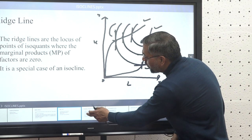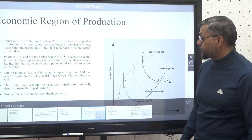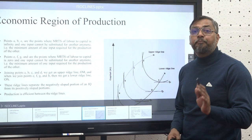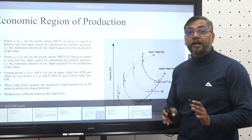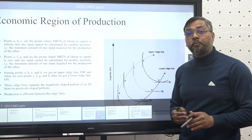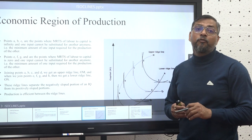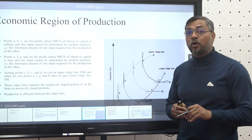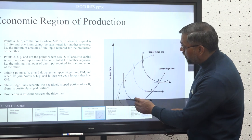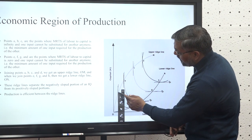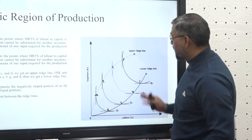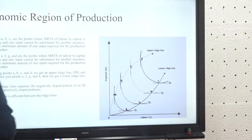An economic region of production is a region where a producer is willing to produce and production takes place in an economic manner. Beyond the economic region of production it is not feasible for a producer to gain benefits or to make production in an economic manner. If you look at points A, B, C, D, E, F, G, and H — points E, F, G, and H are on your lower ridge line and points A, B, C, D are on your upper ridge line.